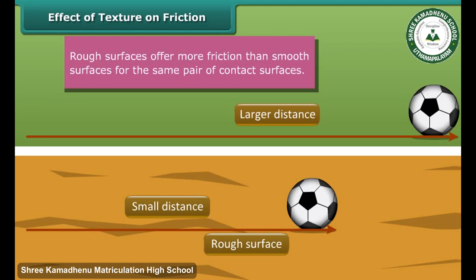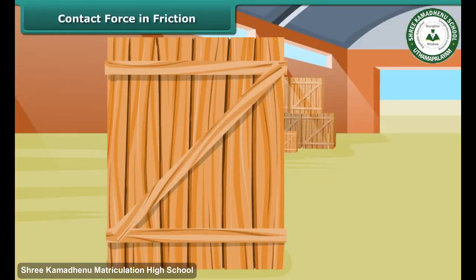This shows that rough surfaces offer more friction than smooth surfaces for the same pair of contact surfaces. This example proves that friction depends on the texture of contact surfaces.